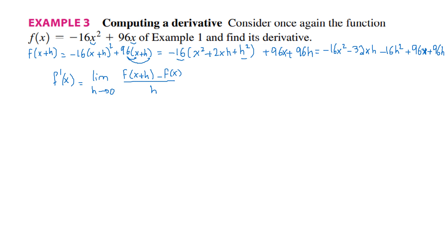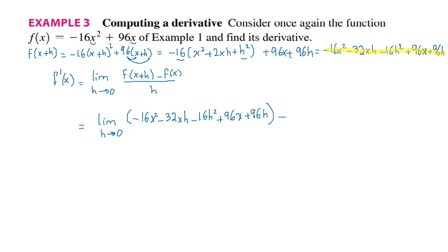Now go back to the formula. This time substitute the expression for f of x plus h. We have the limit as h goes to 0 of: minus 16x squared, minus 32xh, minus 16h squared, plus 96x, plus 96h — this whole expression represents f of x plus h — minus f of x, which is minus 16x squared plus 96x. All divided by h.